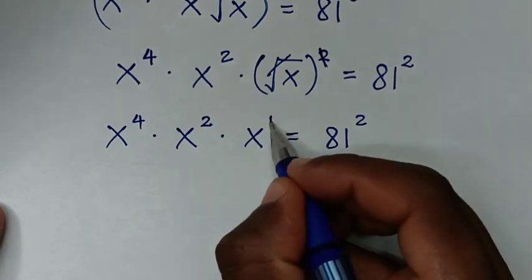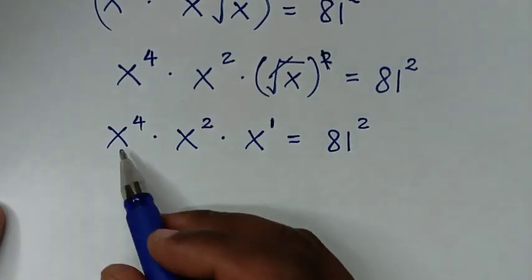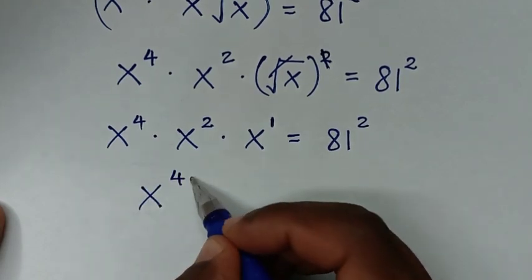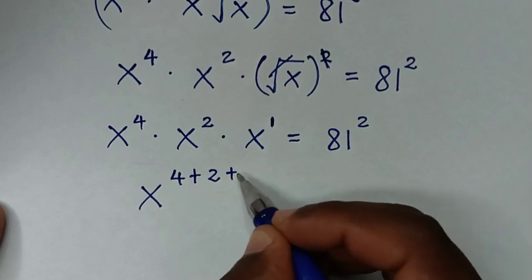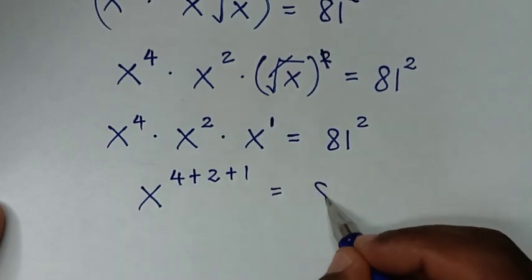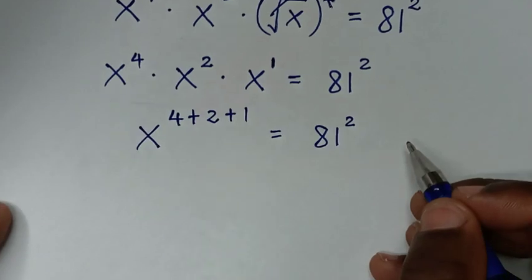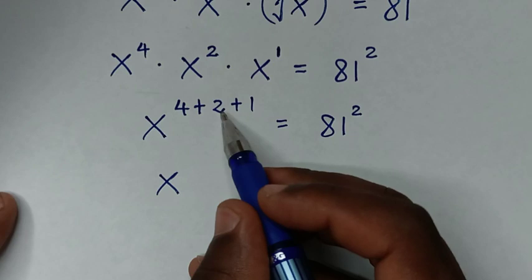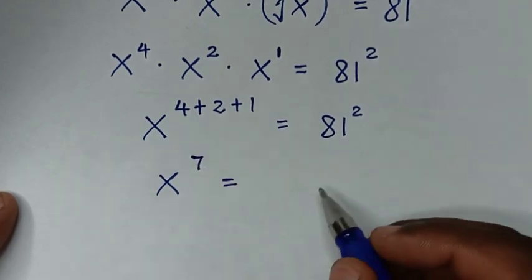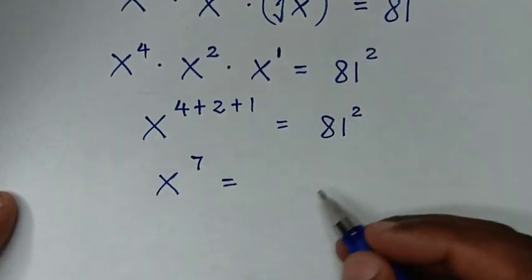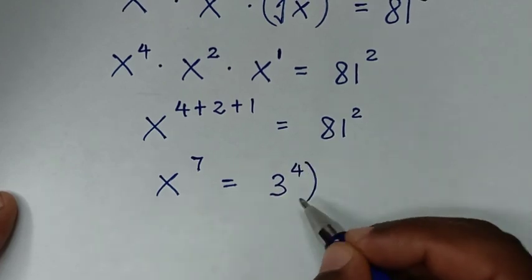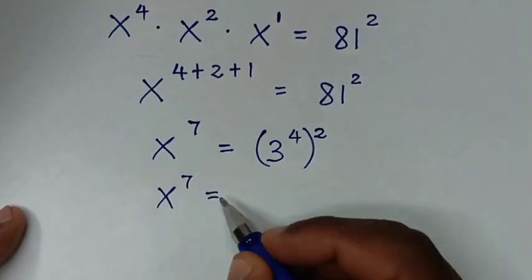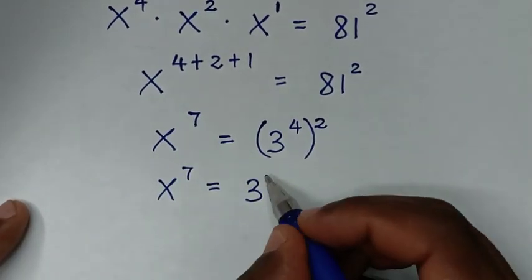Now x is the same as x to the power of 1. This is multiplication of x to the same base. So it will be x to the power of 4 plus 2 plus 1, equal to 81 squared. That gives us x to the power of 7. And 81 is the same as 3 to the power of 4, so 3 to the power of 4 squared equals 3 to the power of 8.